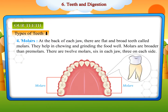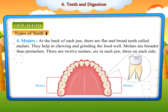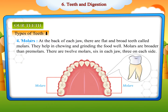At the back of each jaw, there are flat and broad teeth called molars. They help in chewing and grinding the food well. Molars are broader than premolars. There are twelve molars, six in each jaw, three on each side.